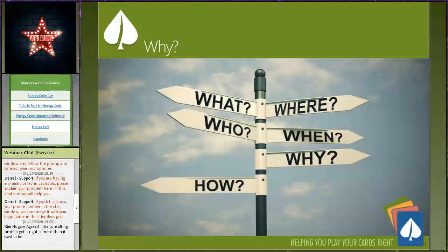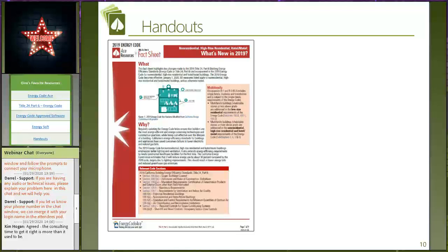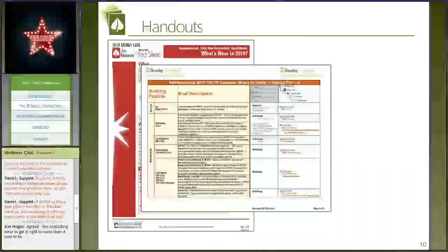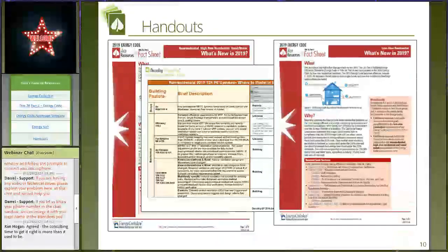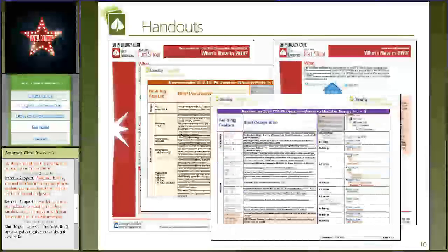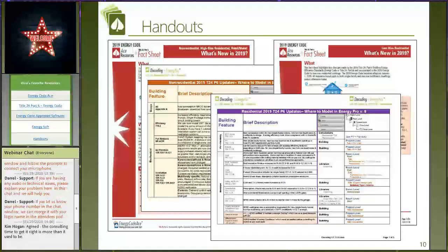Let's talk about our handout. In your last email there was an opportunity to download handouts — we have both non-res and res supported. The handout includes a 'What's New for 2019' fact sheet from Energy Code Ace to get you up to date on code requirements, and then walks through those new code requirements — envelope, mechanical, etc. — diving into exactly where in Energy Pro's building tree you'll go to model those specific building features.